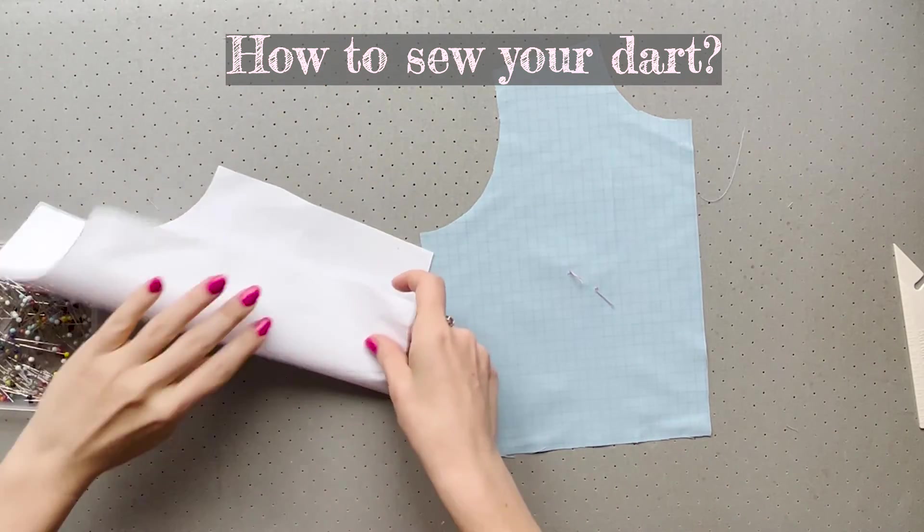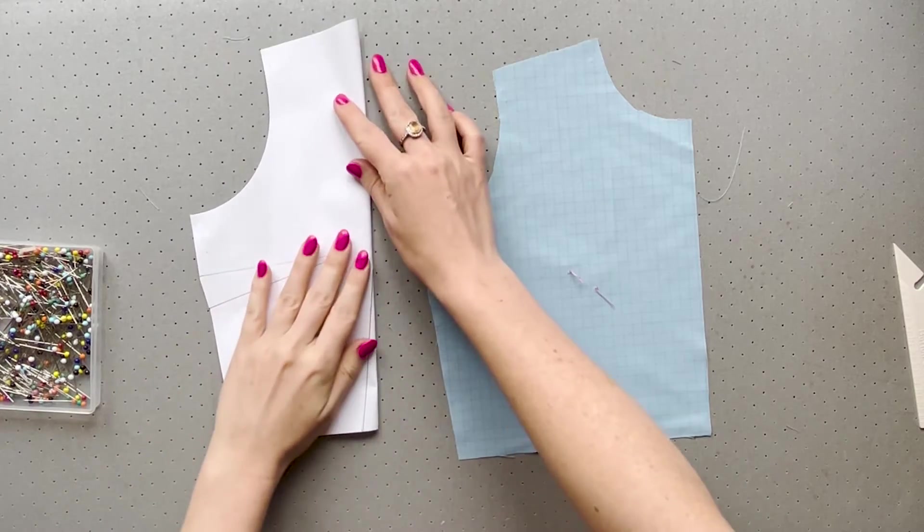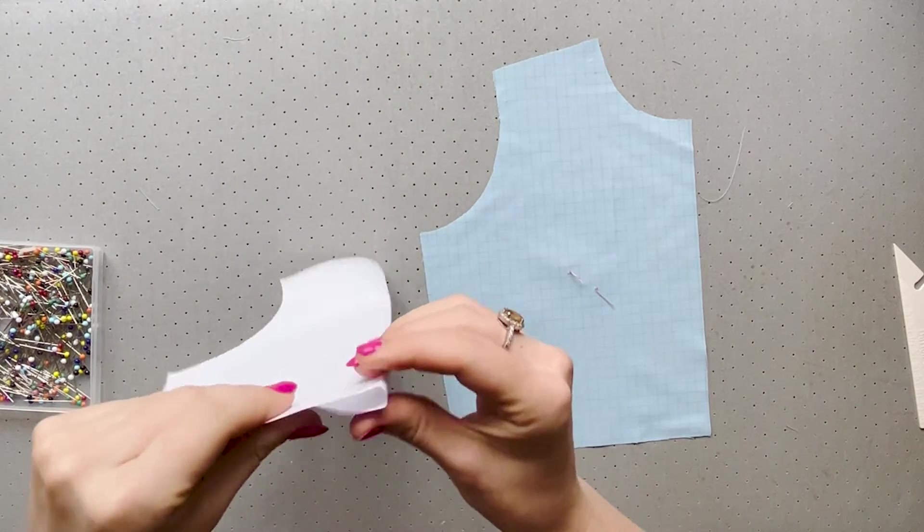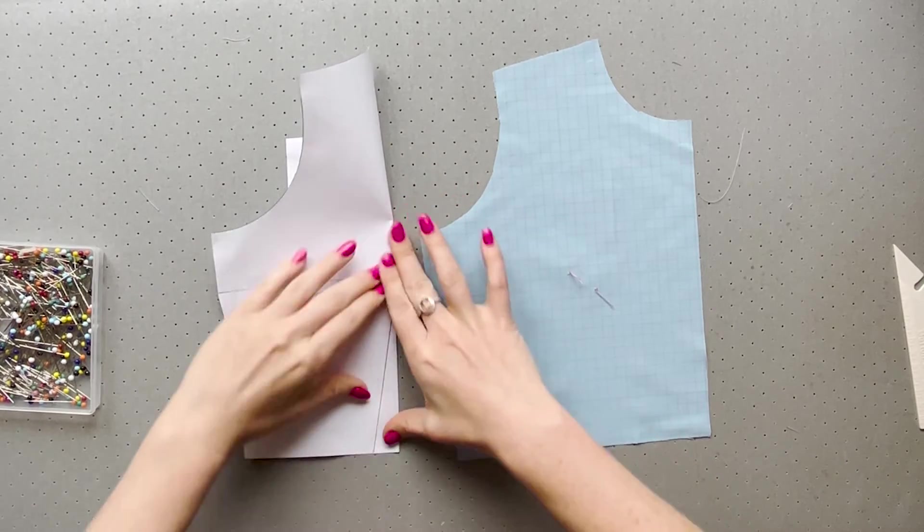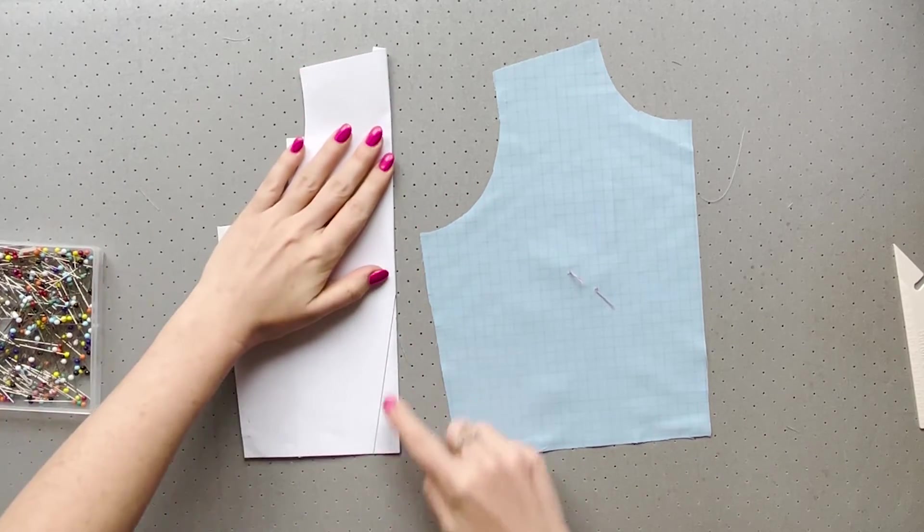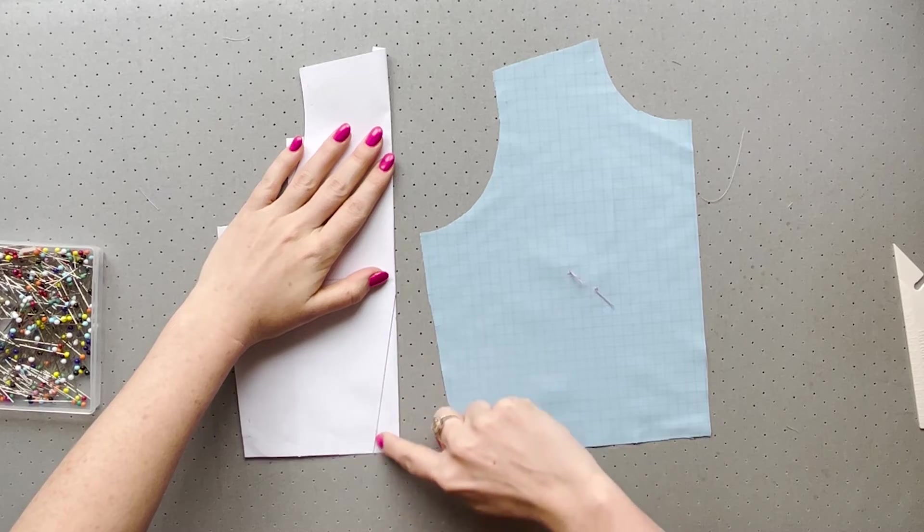Sewing a dart is actually just a straight line going off the edge of your fabric. There are different methods but this is the one I like. Go and try multiple methods. I encourage it. You'll find styles you like and styles you don't. It's personal choice.